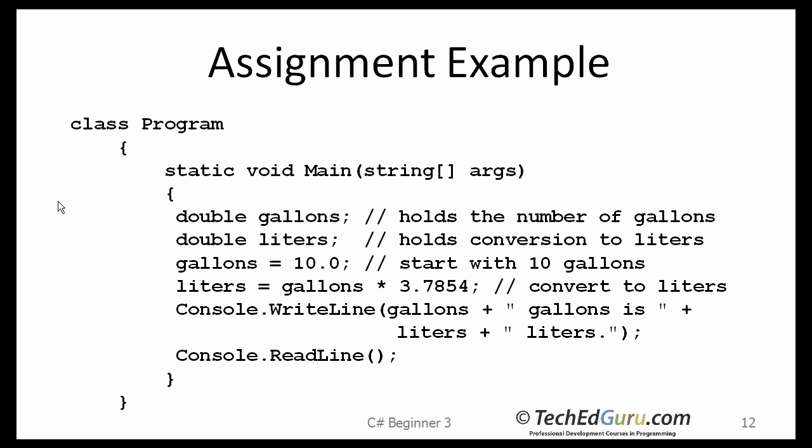This is a complete example showing you how the assignments work. I am declaring a variable called gallons and another one called liters, both of the double type. Next, I am assigning a value of 10 to gallons. My program converts gallons to liters. So, here, my expression is gallons times 3.7854, which is then assigned to liters. When I run this program, it will say gallon 10 equals so many liters. So, this is an example of how the assignment statements work.